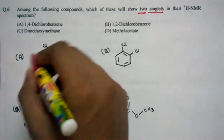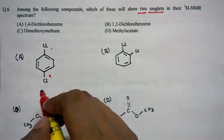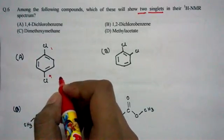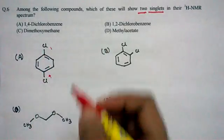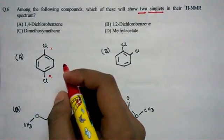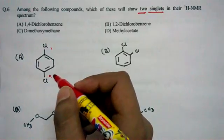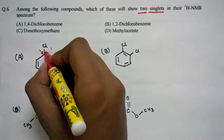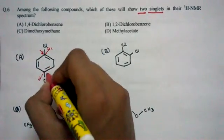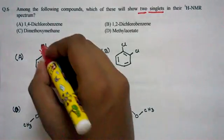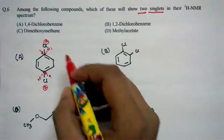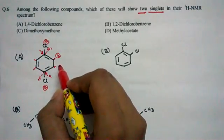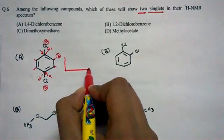The first one is 1,4-dichlorobenzene. You can see this is a benzene ring — this is position 1 and this is position 4 — with two chlorines. To get the idea about how many peaks there would be, we have to figure out how many chemically different hydrogens are there. For this molecule, the hydrogens here and here have the same chemical environment, so we get one peak — let's call it peak A.